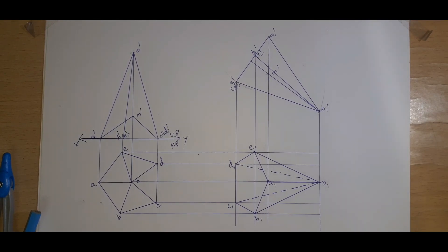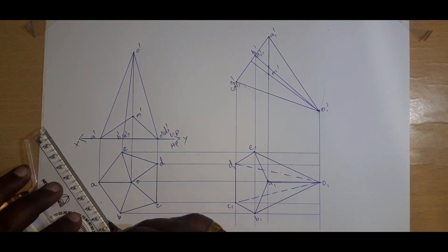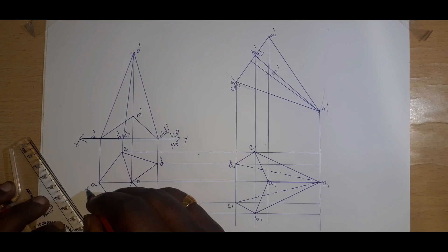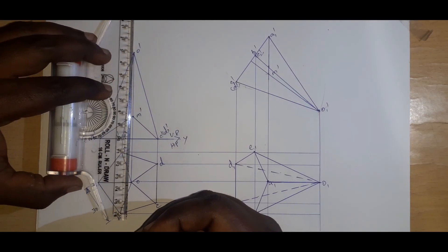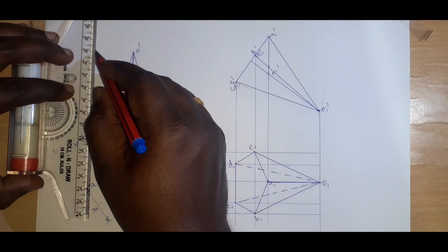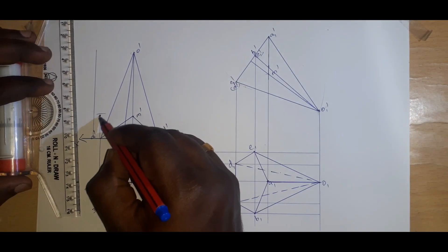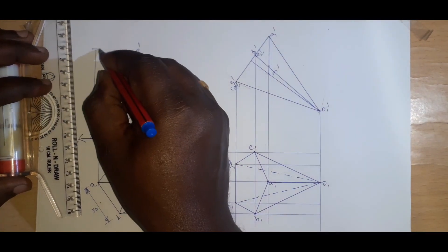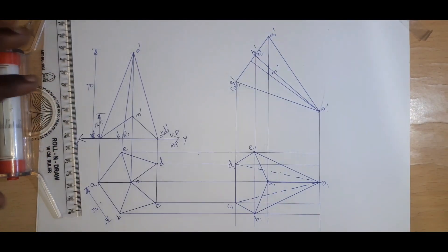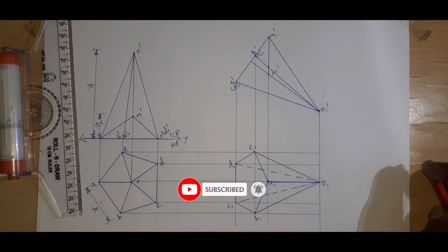This completes the projection diagram. For dimensioning, we draw a parallel line away from the diagram and mark 30mm for the base, 17.5mm for the mass center height, and 70mm for the total axis height. All dimensions are in mm. This is the completed freely suspended pentagonal pyramid projection. Thank you.